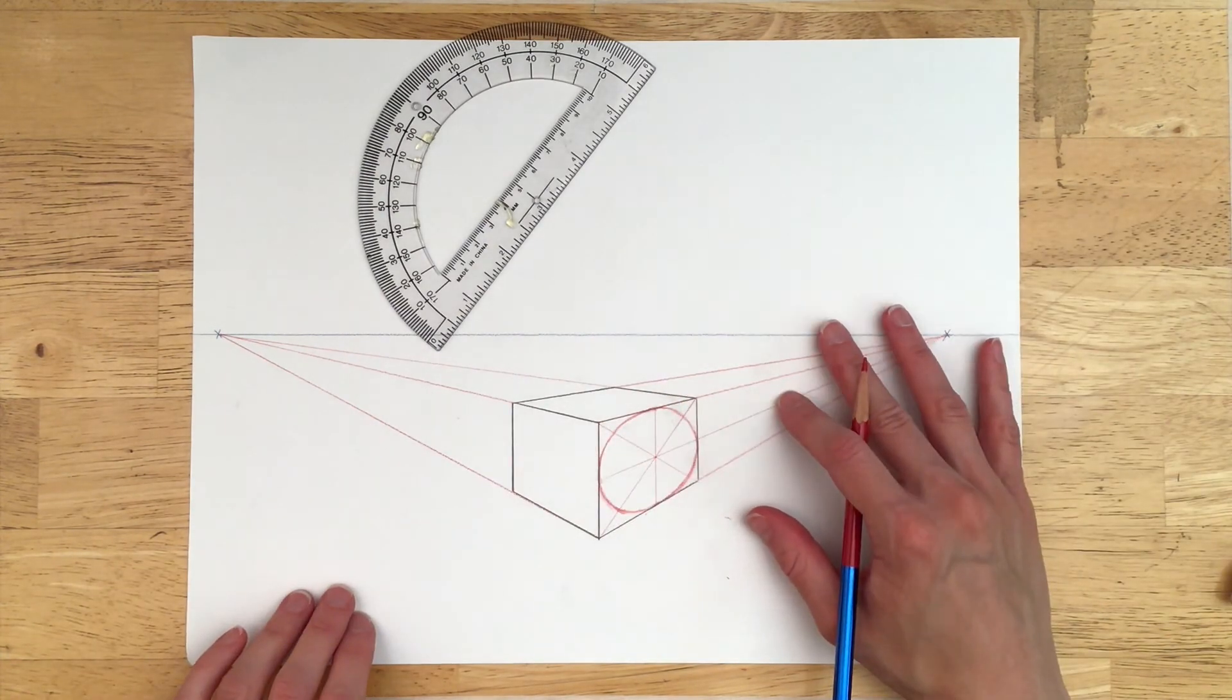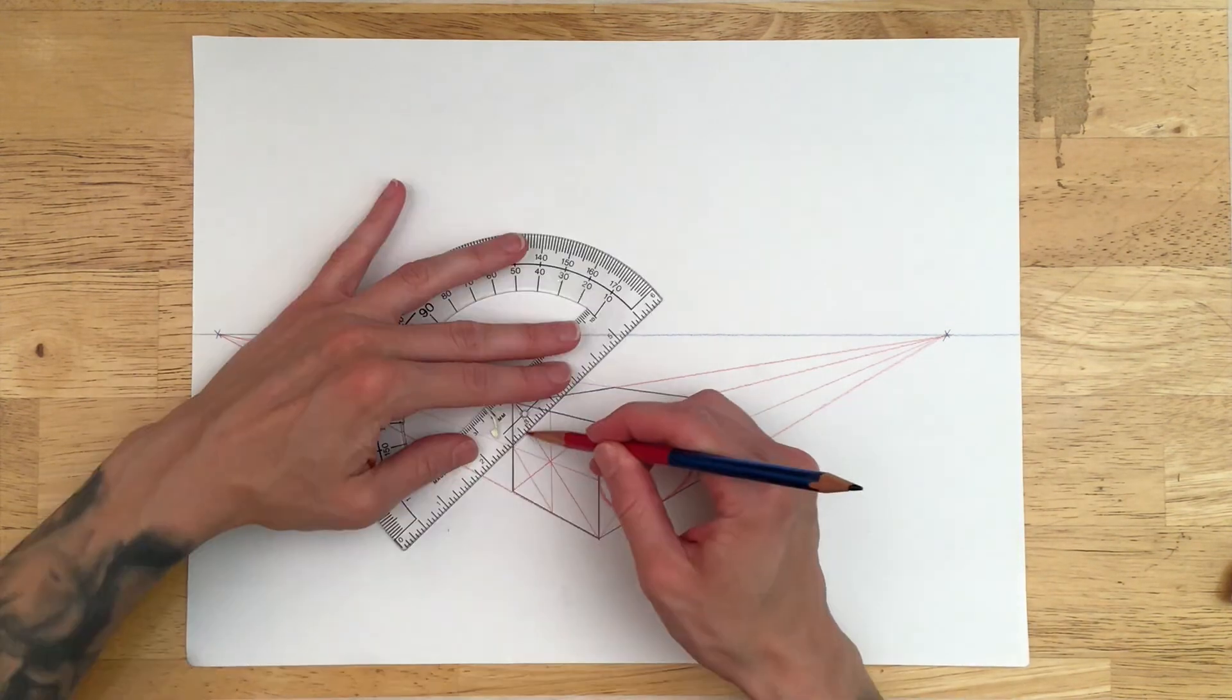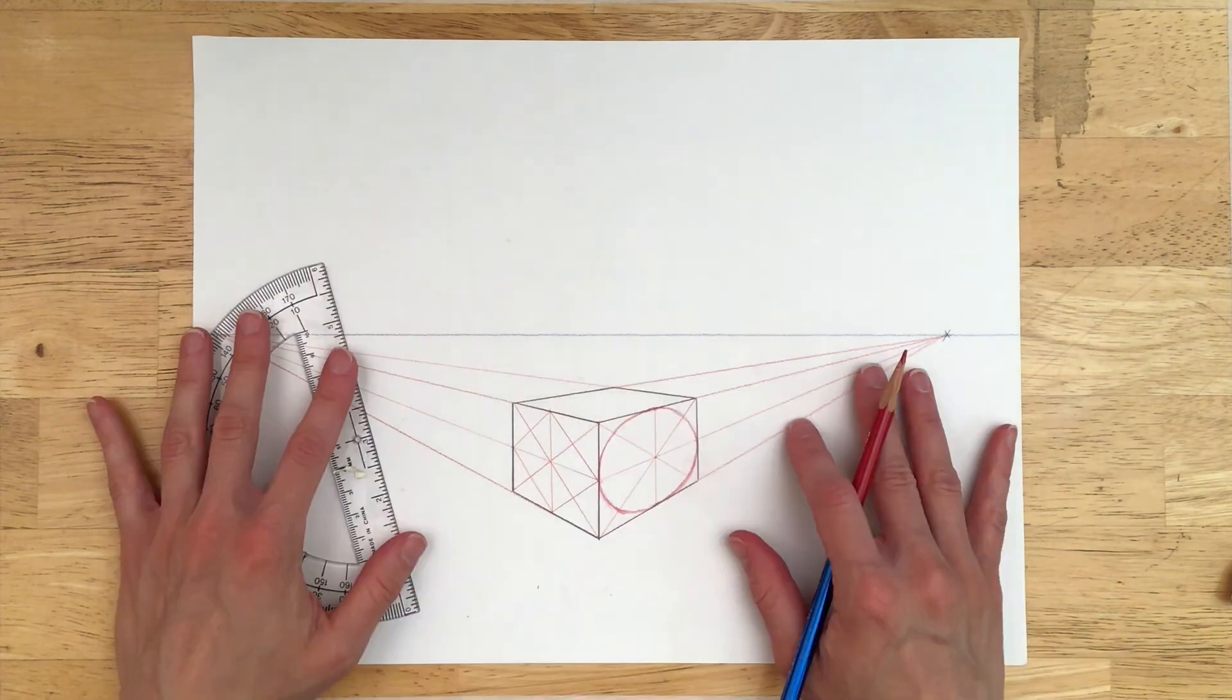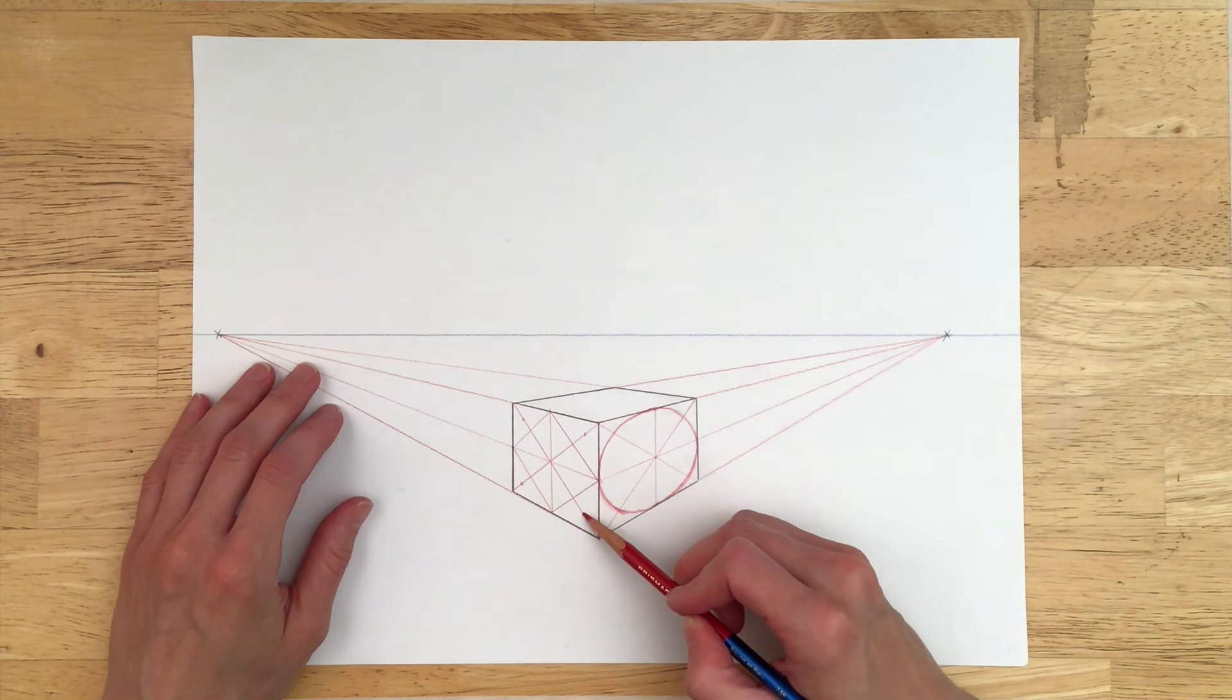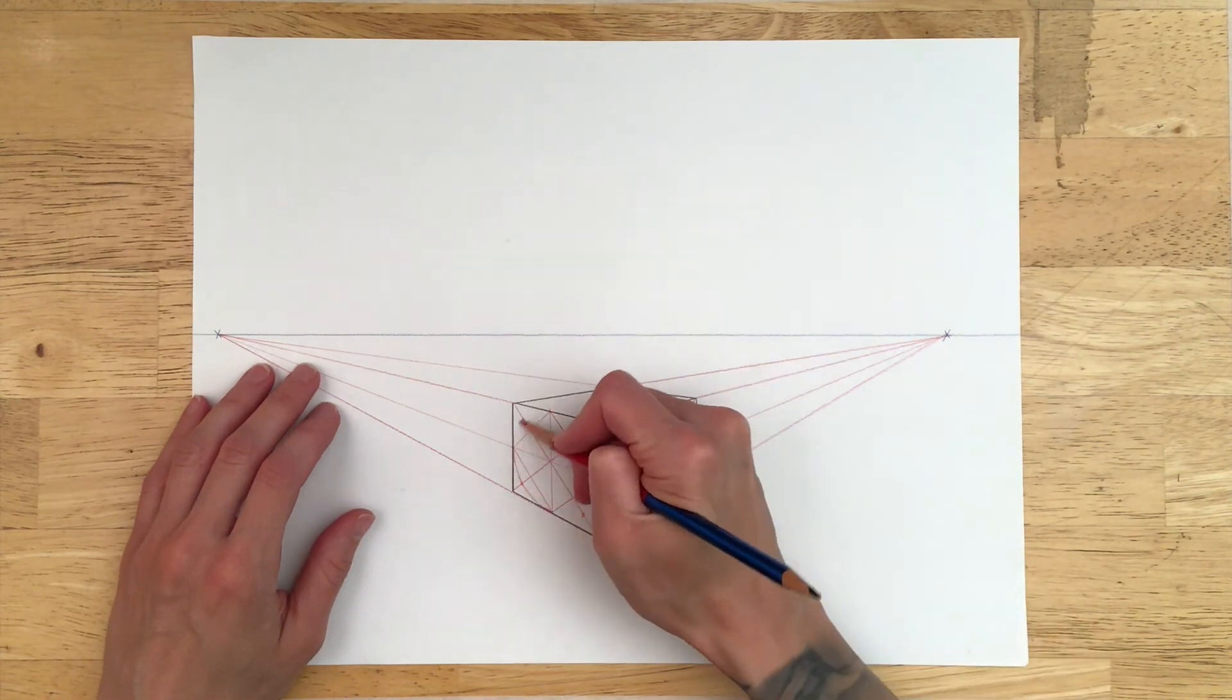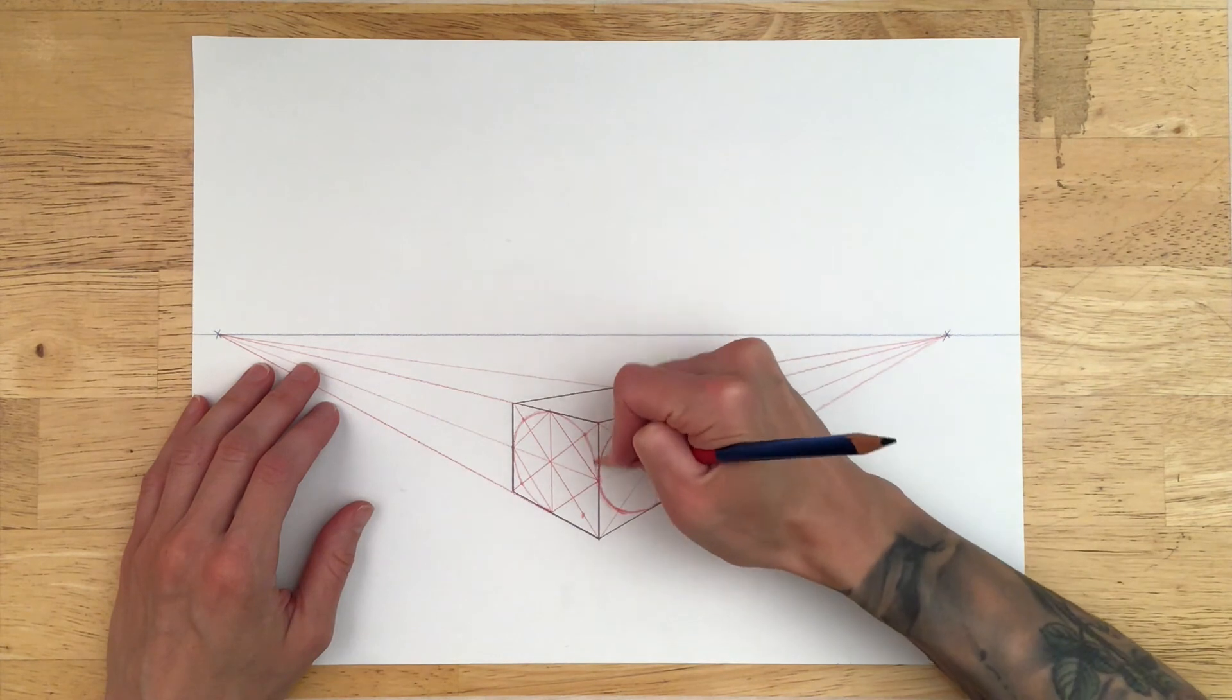If you find that you're having a difficult time drawing the speed of the curve, draw in a diamond first. Roughly locate the halfway point of the triangles. This will give you another point to intersect, making the speed of your curve more accurate.